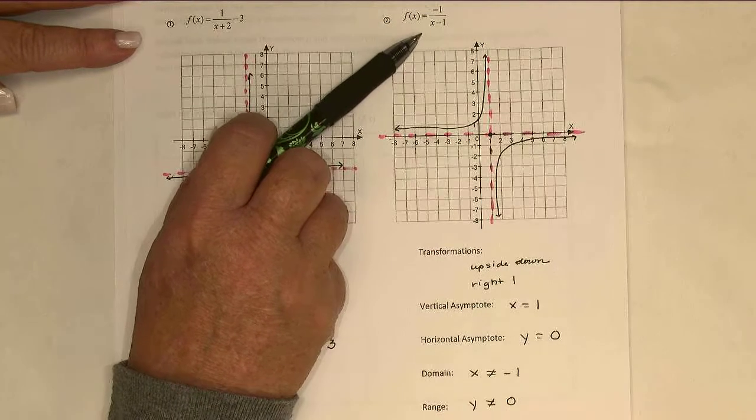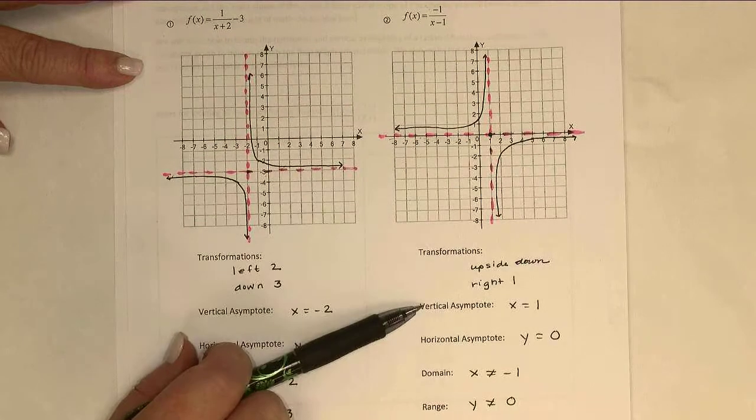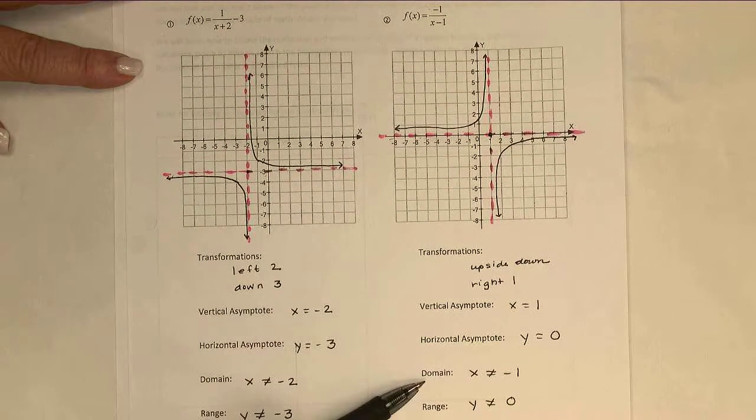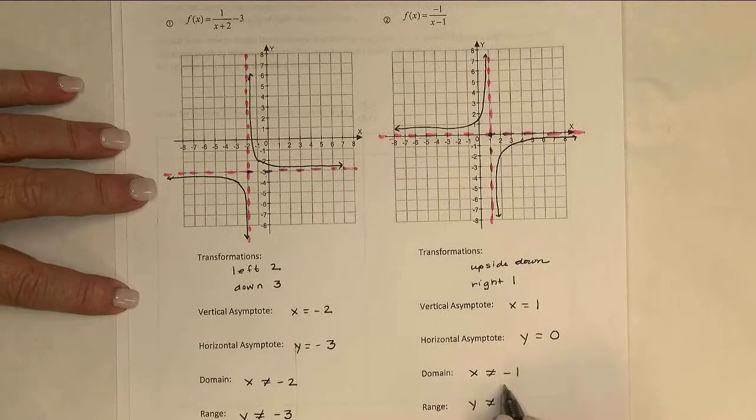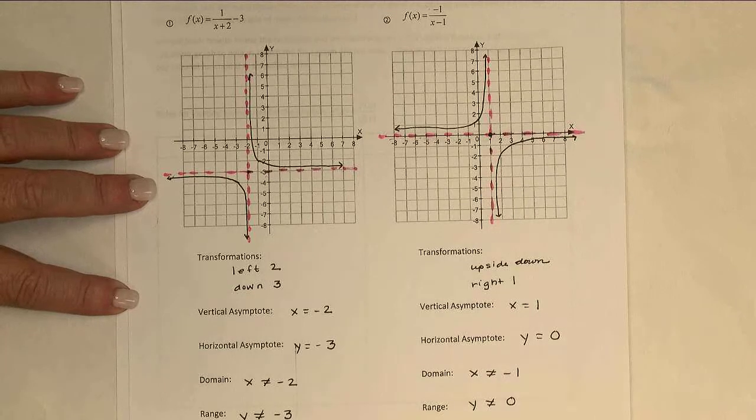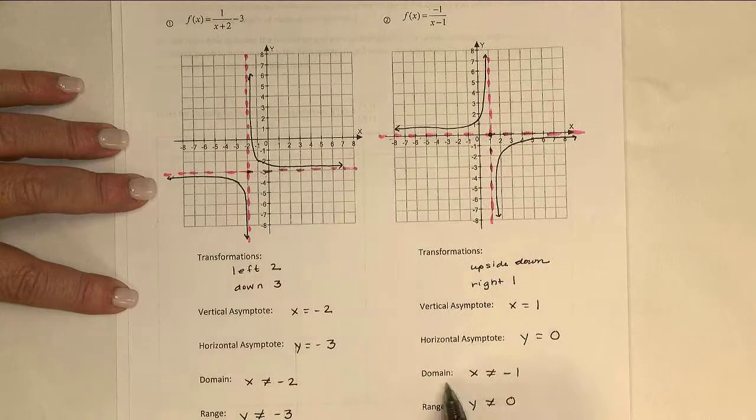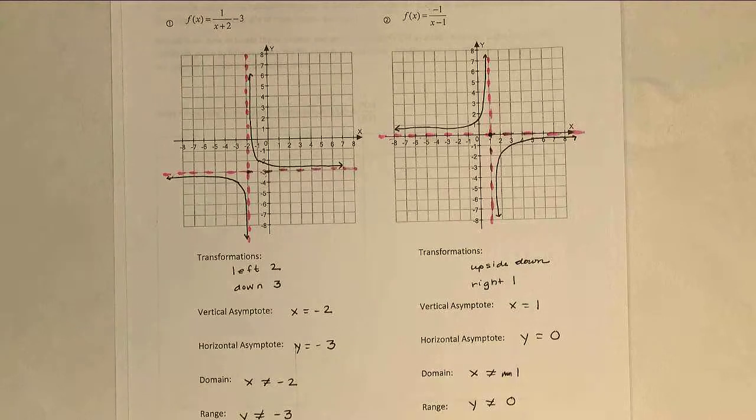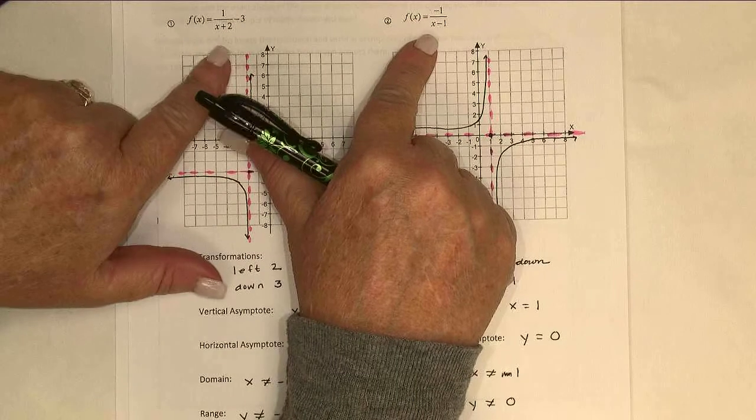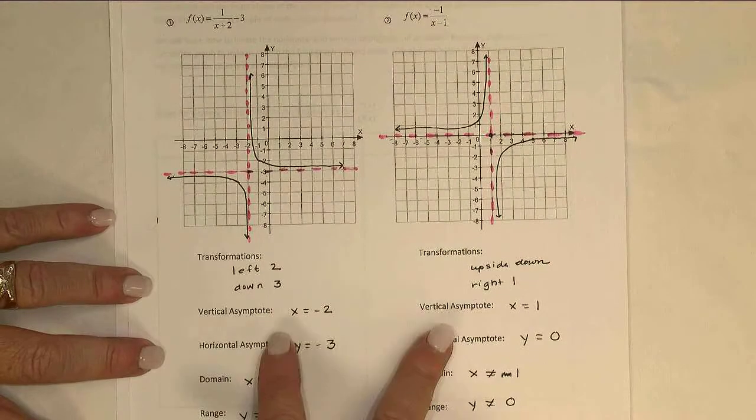So here, I know that x would not be able to be negative 2. That would make the denominator 0, and negative 2 is my vertical asymptote and the value that I exclude from the domain. Over here, if x were 1, that would make the denominator 0. x equals 1 is the vertical asymptote, and it's also the value excluded from the domain. Sorry, I just realized I wrote a negative one here instead of a positive one. You might want to go back and fix that in your notes as well. The vertical asymptote was x equals 1. That means the domain is x is not equal to 1.